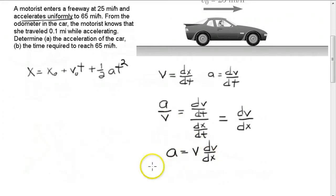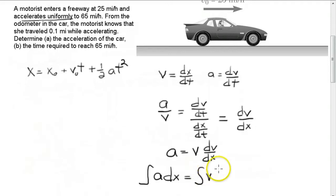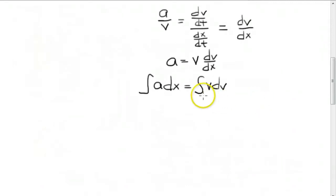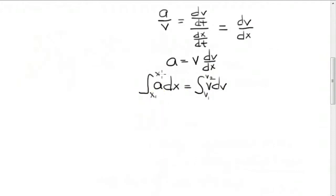We'll write the integral of A dx must be equal to the integral of V dv. We set the limits on the integral to the initial velocity V1 and the final velocity V2, and the corresponding initial position x1 and final position x2.